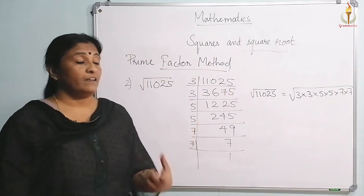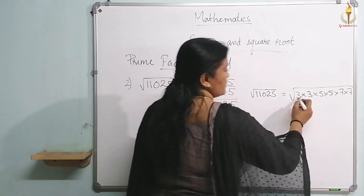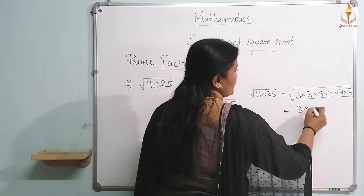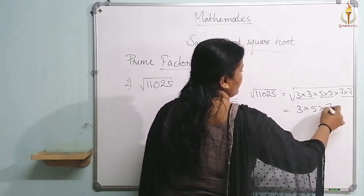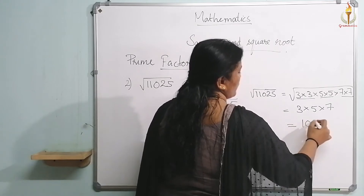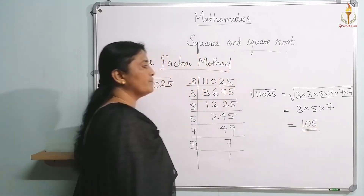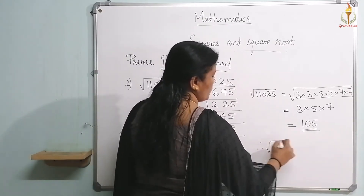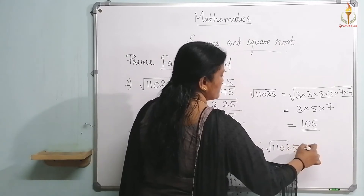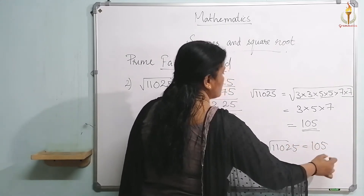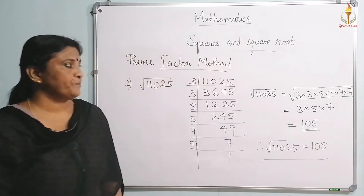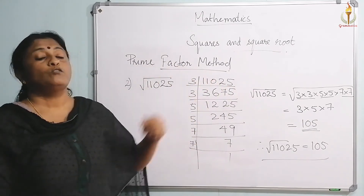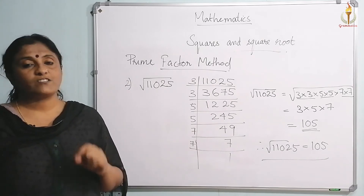So the square root of 11025 = √(3 × 3 × 5 × 5 × 7 × 7). Make the pairs: (3 × 3), (5 × 5), (7 × 7). Take one factor from each pair: 3 × 5 × 7 = 105. Therefore, the square root of 11025 is equal to 105. This is how you use the prime factorization method to find the square root of a given perfect square.